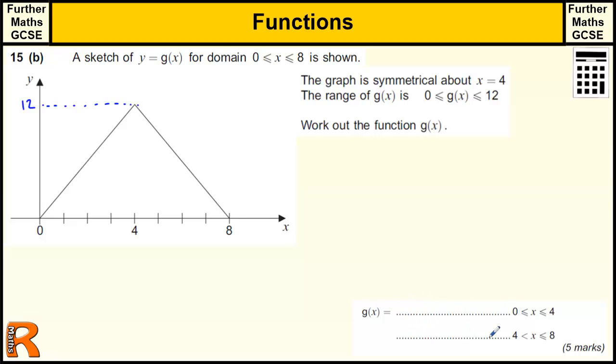So we've got two parts of the equation. We've got the bit where it's between 0 and 4, and then the bit between 4 and 8. So if we think about this section here, it's going across 4 and up 12. So the gradient, so for every one across, we're going up 3. So the gradient is 3.